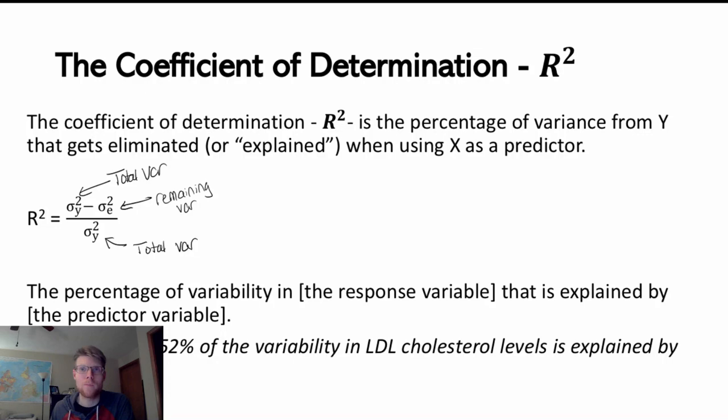By dividing that by total variance again, we're turning this into a percentage. If we didn't explain any variance, this value would come out to zero. And if we explained all of the variance, if we didn't have any leftover variance at all, then this would come out to one.